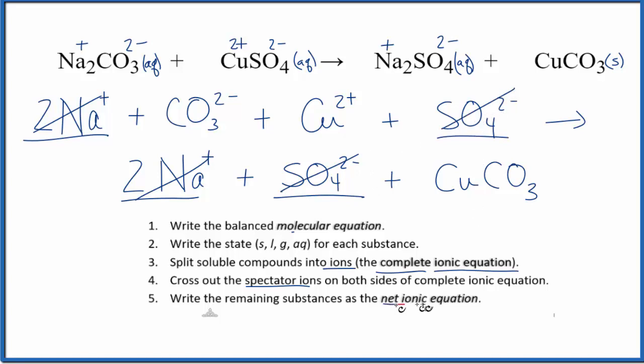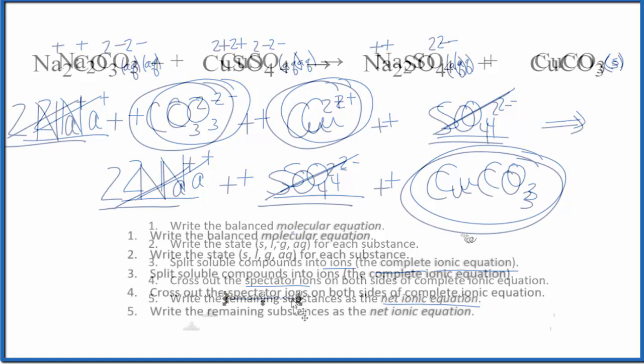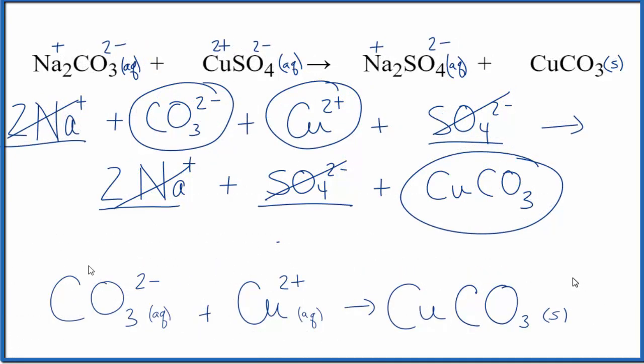That leaves us with the net ionic equation. We have the carbonate ion, the copper 2 ion, and then the products, this copper 2 carbonate. So from here, let's clean this up and write the net ionic equation a little bit neater. So this is the net ionic equation here for Na2CO3 plus CuSO4, sodium carbonate plus copper 2 sulfate. Sometimes they'll put the copper 2 ion first in the equation. It really doesn't matter. This is the correct net ionic equation. And this is Dr. B with the net ionic equation for sodium carbonate and copper 2 sulfate. Thanks for watching.